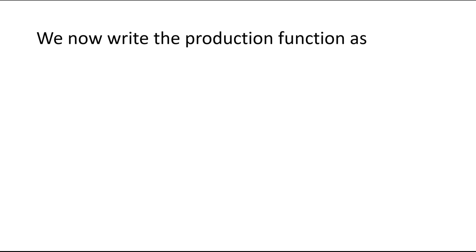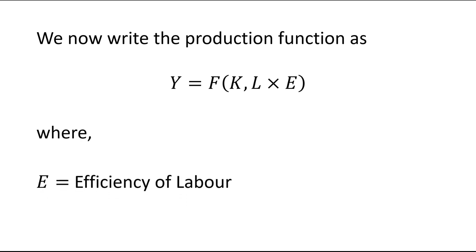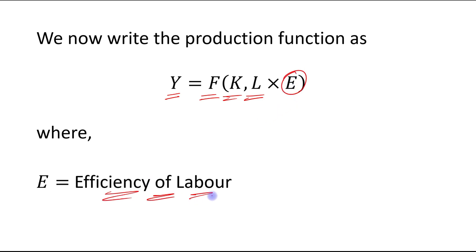We now write the production function in a new form where E denotes the efficiency of labor. So this is total output, this is the function, this is capital, this is labor, and this new term is the efficiency of labor.